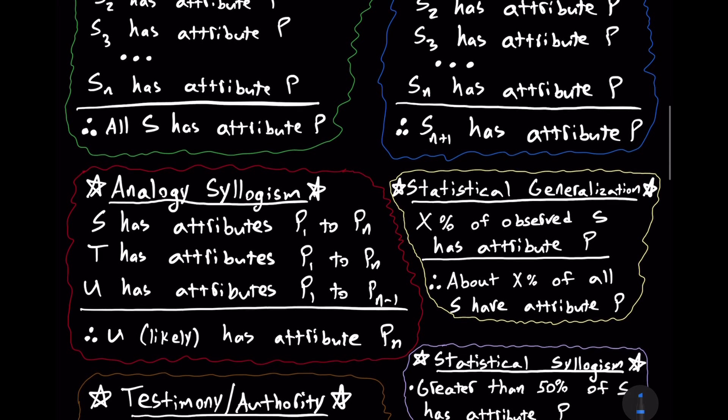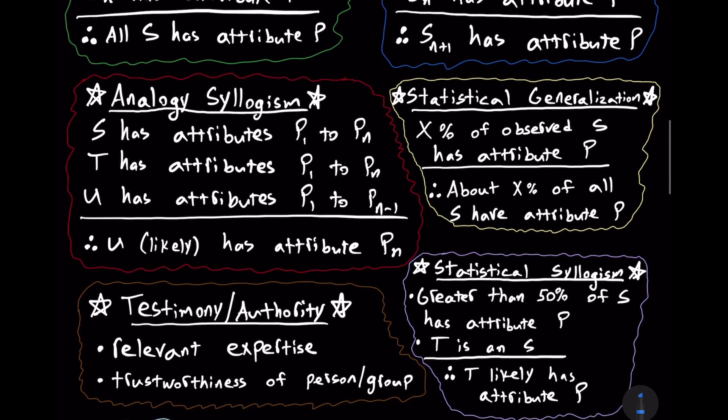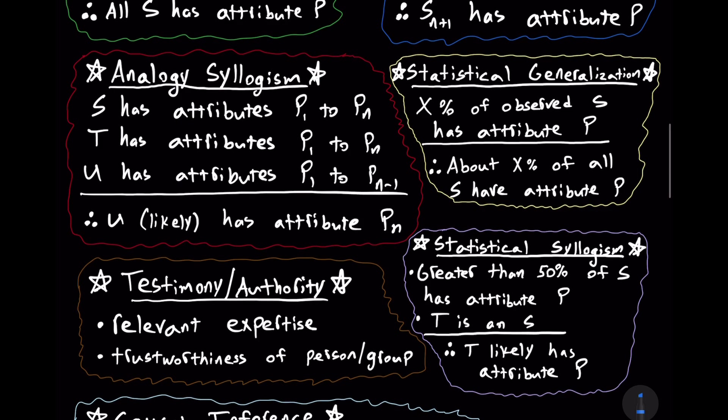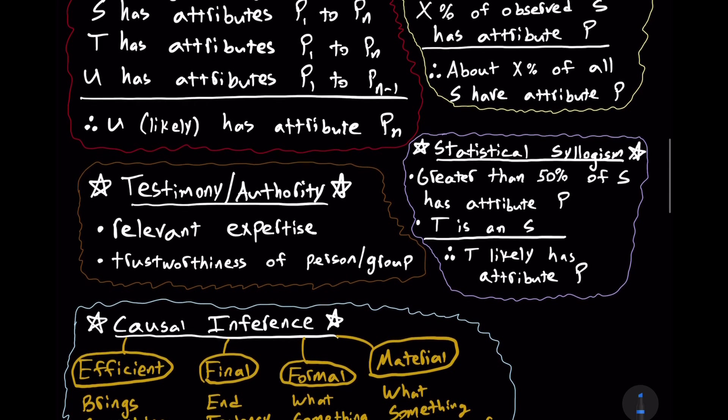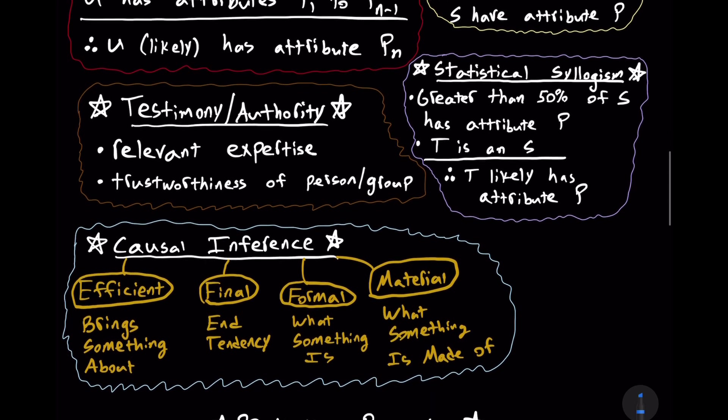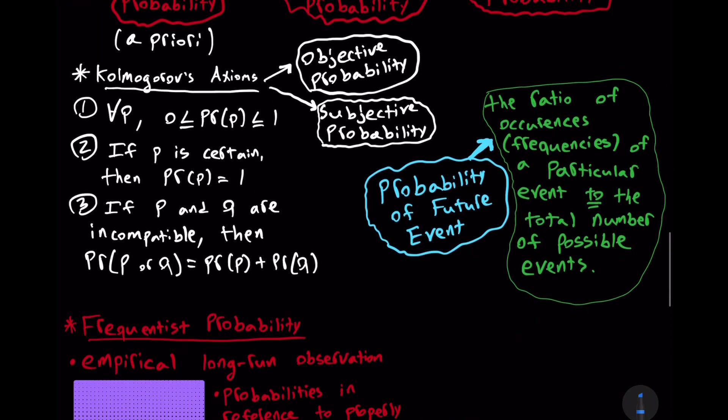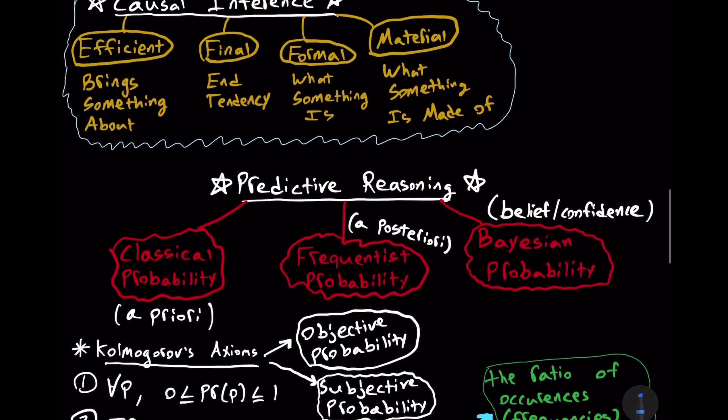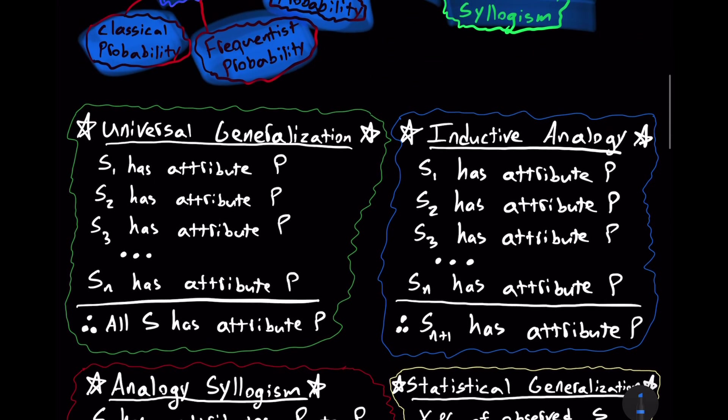So based on this definition, an argument from authority or testimony is not an inductive argument, period. In contrast, more modern textbooks will define induction more broadly to be basically any probabilistic argument that lacks deductive certainty. And in this sense, based on this modern definition, an argument from authority is definitely an inductive argument. So we're going to preview all of this, or at least give a sample of many different features of induction, which I haven't covered too much on my YouTube channel yet. But we'll start from the beginning.